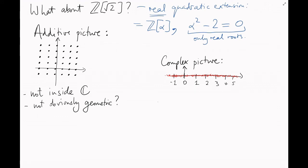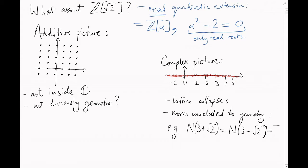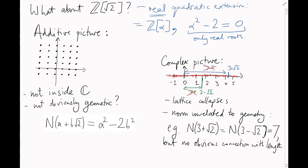And we've already seen that if we draw this picture, the lattice will collapse. And the geometry here no longer matches up with the norm function either. Remember, the norm of an element a plus b root 2 is a squared minus 2b squared. So for example, 3 plus root 2 and 3 minus root 2 both have the same norm, 7. But there isn't an obvious connection here with this length function on the real line.